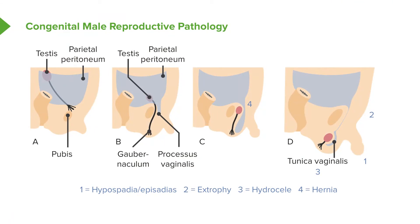Next, we have a little structure called the processus vaginalis — just a quick overview of anatomy here. On the bottom you'll notice numbers, and at letter D in the illustration, we consider what happens if you had openings either on the dorsum or the ventral aspect of the penis.